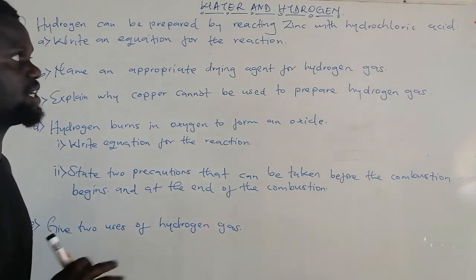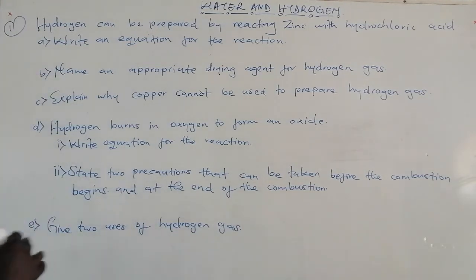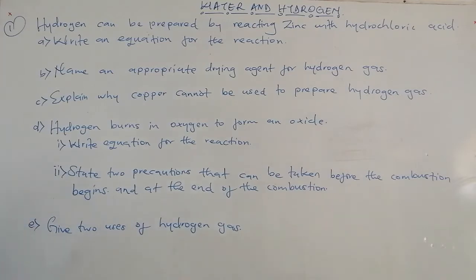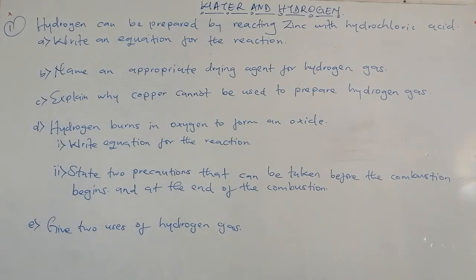It is the last topic in Form 1. I have a very simple and detailed question — just one that I'm going to cover and explain in detail. Under the first question, we've been asked: hydrogen can be prepared by reacting zinc with hydrochloric acid. Write an equation for the reaction.